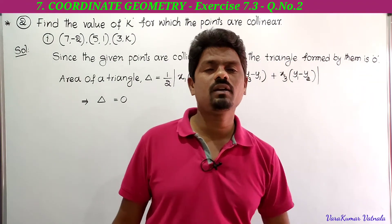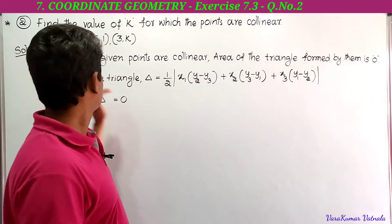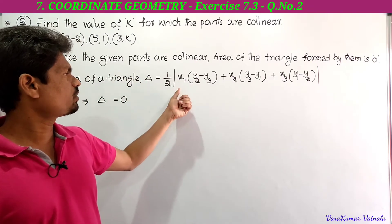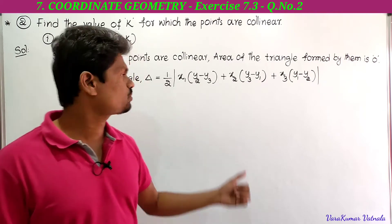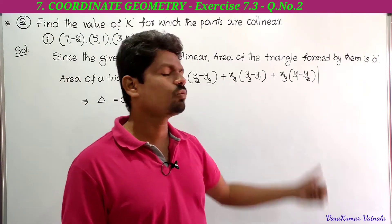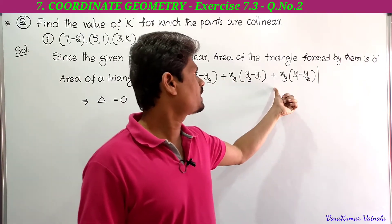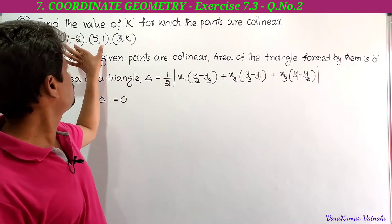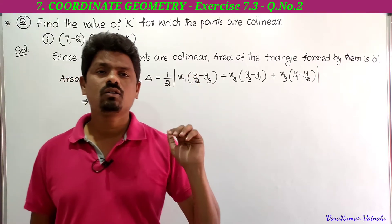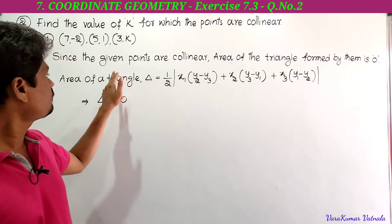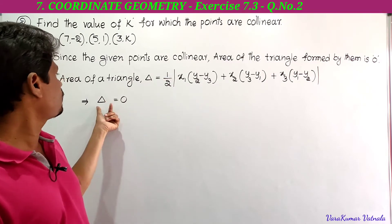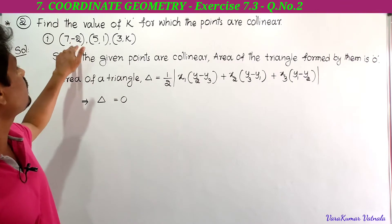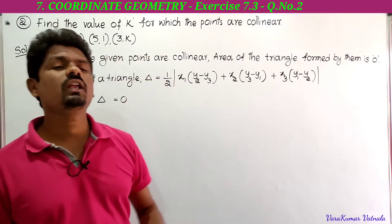Since the given points are collinear, the area of the triangle formed by them is 0. The area of triangle delta is equal to half into modulus of x1(y2 - y3) + x2(y3 - y1) + x3(y1 - y2). We just have to substitute these values in the formula to get the value of k. Since the area of the triangle is 0, delta is equal to 0.